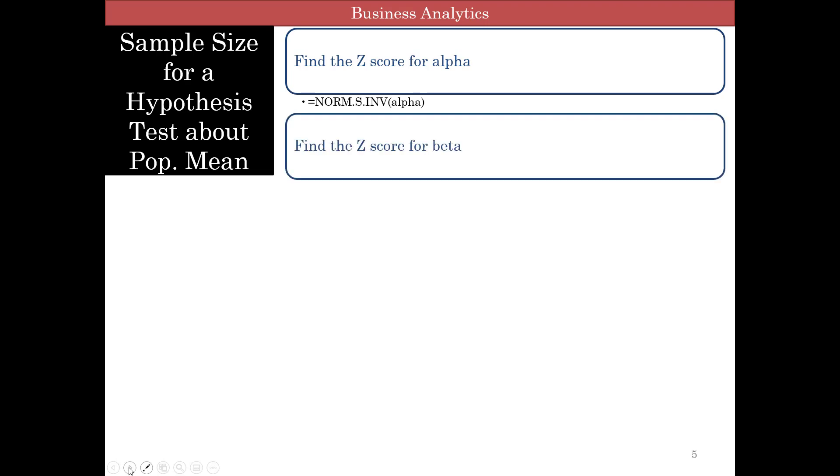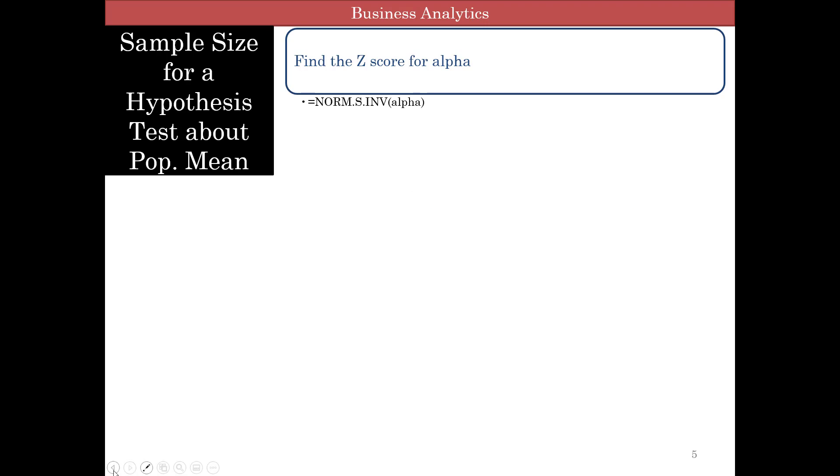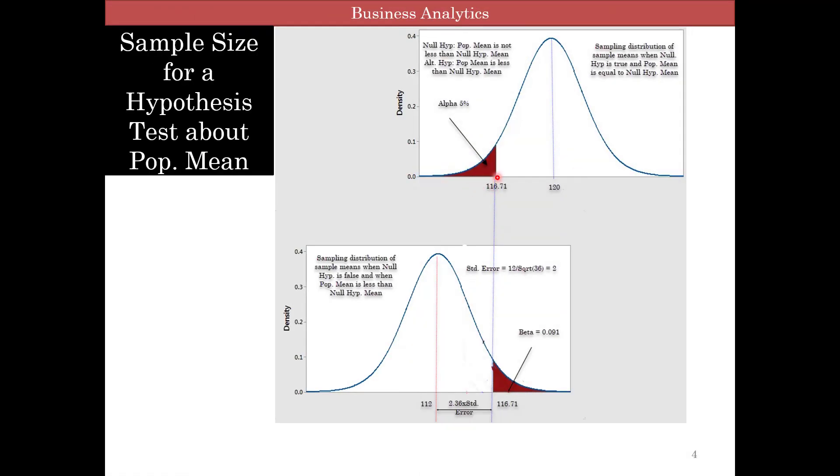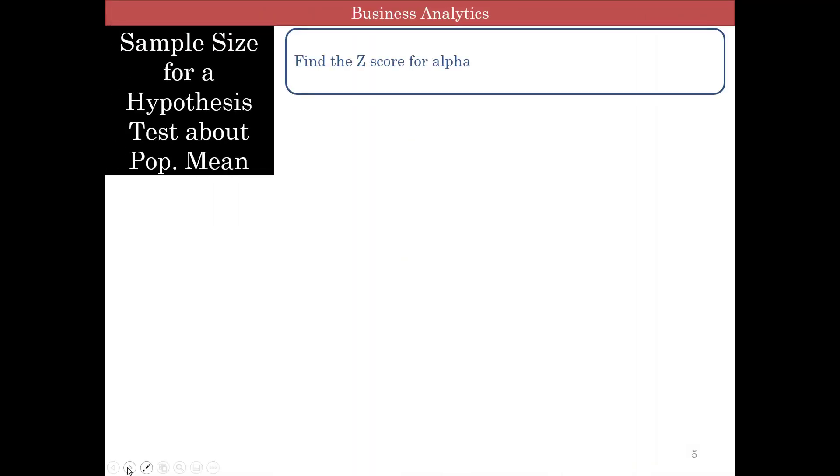How do we find the sample size using this? First you find the z-score for alpha using NORM.S.INV. You find the z-score for beta. The critical value is at the same spot for alpha and beta, so we can use that.